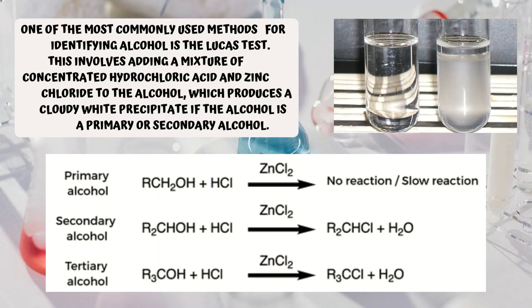The most commonly used method for identifying alcohol is the Lucas test. This involves adding a mixture of concentrated HCl and zinc chloride to the alcohol, which produces a cloudy white precipitate if the alcohol is a primary or secondary alcohol.